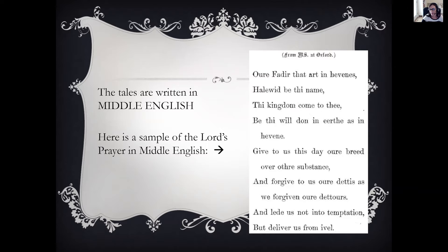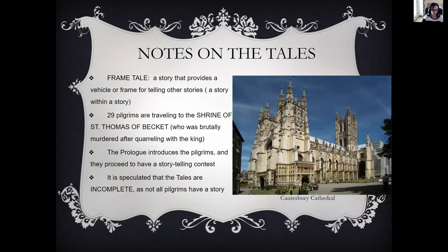Here's a sample of Middle English — the Lord's Prayer: 'Our Father that art in heaven, hallowed be thy name, a kingdom come to thee. Be thy will done on earth as in heaven. Give to us this day our bread over our other substance, and forgive to us our debts as we forgiven our debtors, and lead us not into temptation, but deliver us from evil.' This frame tale is a story that provides a frame or setting for telling other stories.